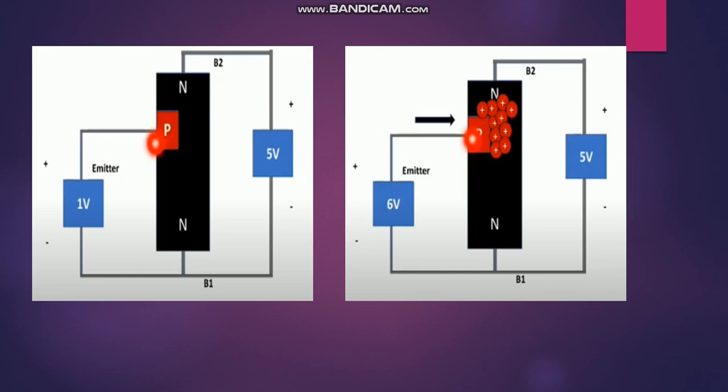In the N-type semiconductor, holes are minority carriers and electrons are majority carriers. In the P-type, holes are majority carriers and electrons are minority carriers. The N-type here is a lightly doped semiconductor. During doping, impurities are added to the semiconductor material.